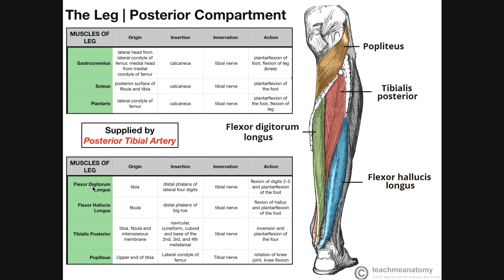Let's begin with the two flexors: flexor digitorum longus and flexor hallucis longus. The flexor digitorum longus over here in green is the medial muscle, and the flexor hallucis longus over here is the lateral muscle. How do I know that? When I look at the popliteus, its proximal attachment is on the femur — specifically the lateral condyle. So therefore, this side of the leg has to be the lateral side, and over here on the left would be the medial side. Therefore, flexor digitorum longus is our medial muscle.